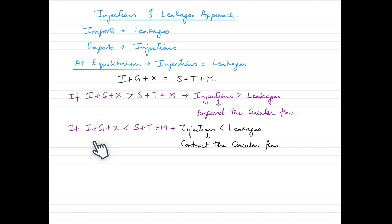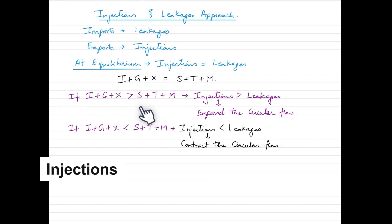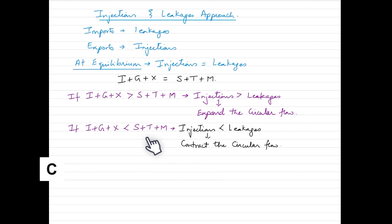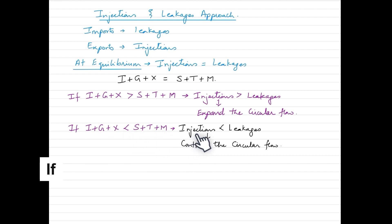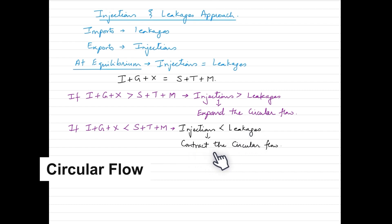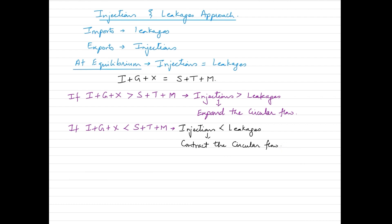If there is disequilibrium in the economy, one of two scenarios prevails. If I + G + X is greater than S + T + M, injections are greater than leakages, and this expands the circular flow because more money is injected into the economy. If I + G + X is smaller than S + T + M, injections are smaller than leakages, more money is leaking out, and this contracts the circular flow of income.